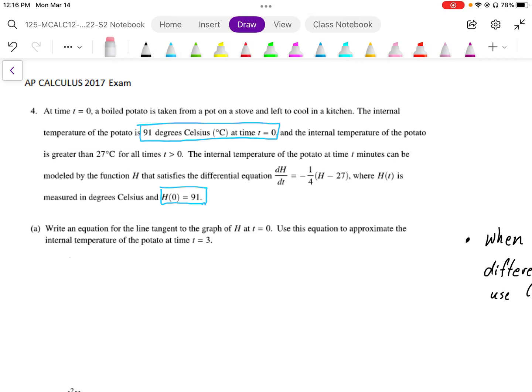This is a cooling problem with a boiled potato starting at 91 degrees Celsius at t equals 0, and it cools with the differential equation dH/dt equals negative 1/4 times H minus 27. We have this differential equation to calculate slope and an initial condition of 0 and 91.